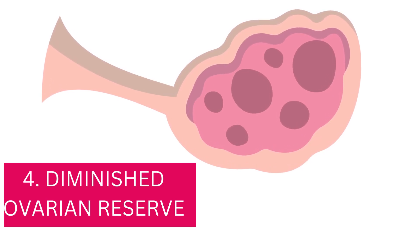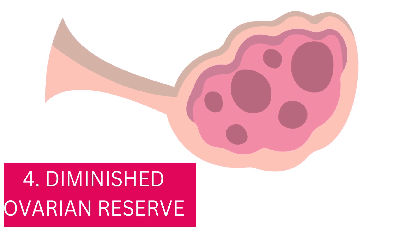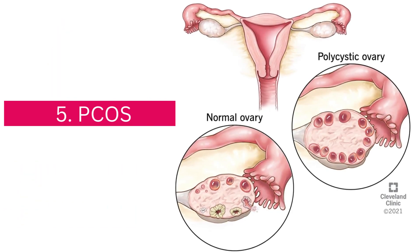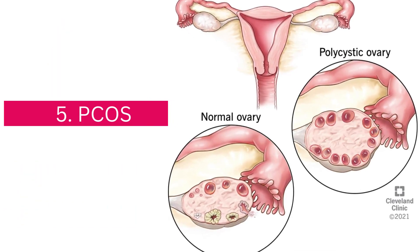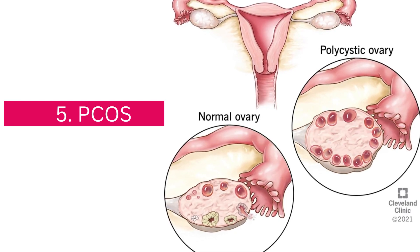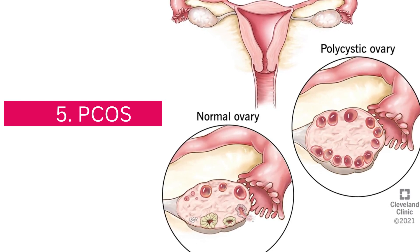The next point is called diminished ovarian reserve. When we are born as women, we are born with all the eggs we'll ever need — millions of eggs — and as we age they begin to reduce gradually until menopause. But for some women, they find out at some point in their reproductive years that they have fewer eggs than normal.